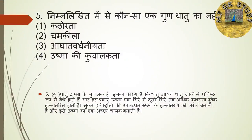अगला question है: निम्नलिखित में से कौन सा एक गुण धातु का नहीं है? Options हैं — कठोरता, चमकीला, आघातवर्धनीयता, ऊष्मा की सुचालकता। इसका right answer है ऊष्मा की सुचालकता — क्योंकि धातु आयन धातु जाली में घनिष्ठ रूप से बंधे होते हैं और ऊष्मा एक सिरे से दूसरे सिरे तक अधिक कुशलता से स्थानांतरित होती है। मुक्त इलेक्ट्रॉनों की उपलब्धता इसे ऊष्मा का अच्छा चालक बनाती है।